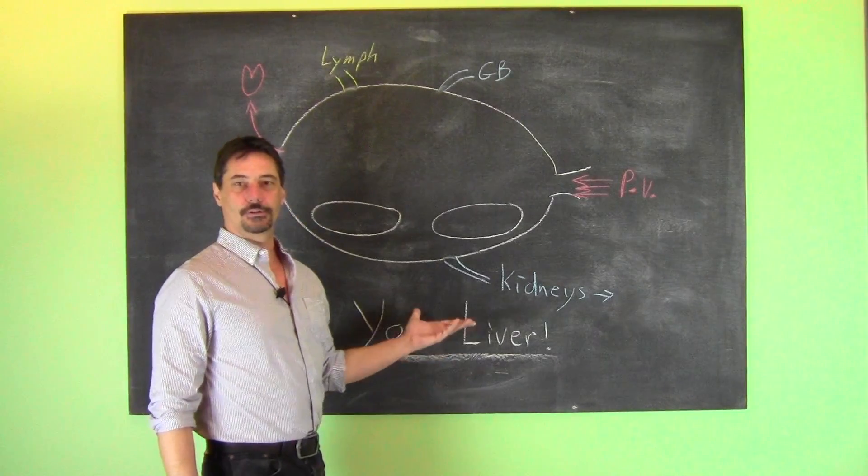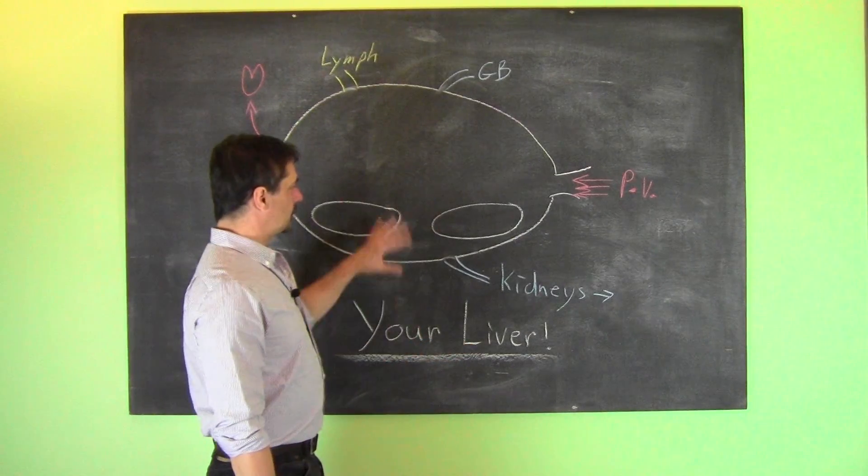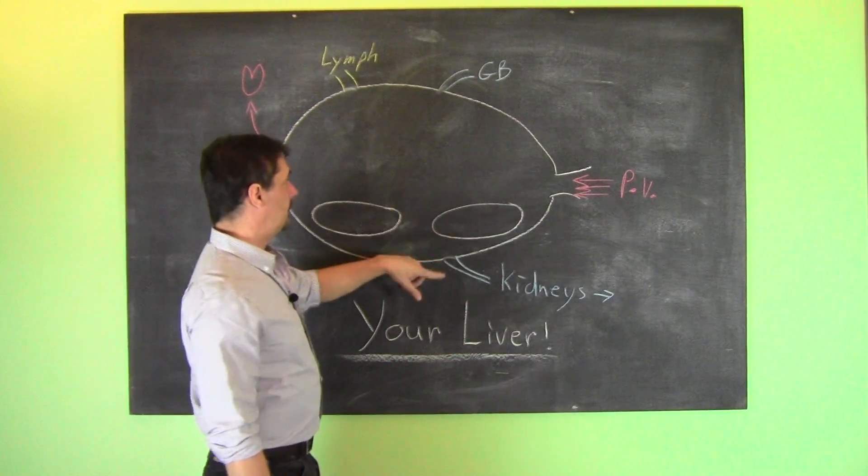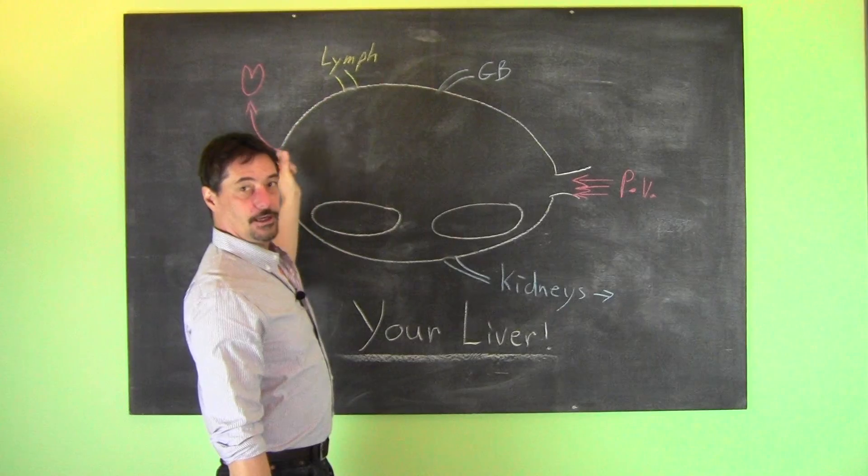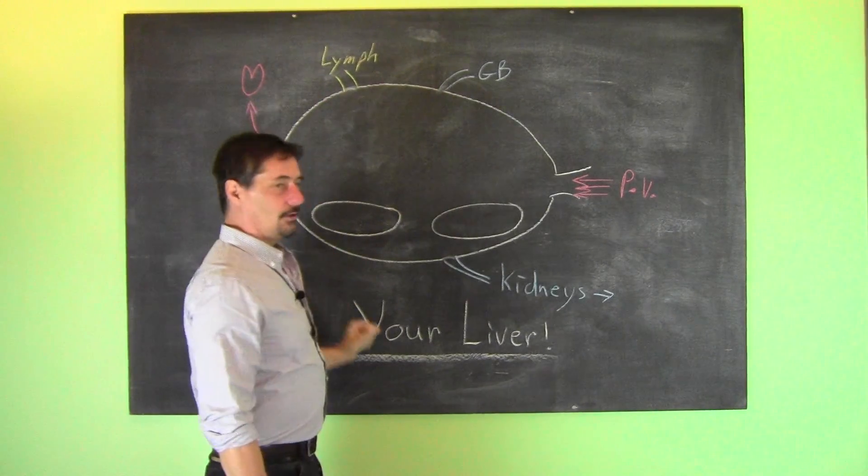Today I'm going to introduce you to your liver. I'll explain how your liver works on the inside and how it's connected to your kidneys, your gallbladder, your lymphatic system and your vascular system or your heart.